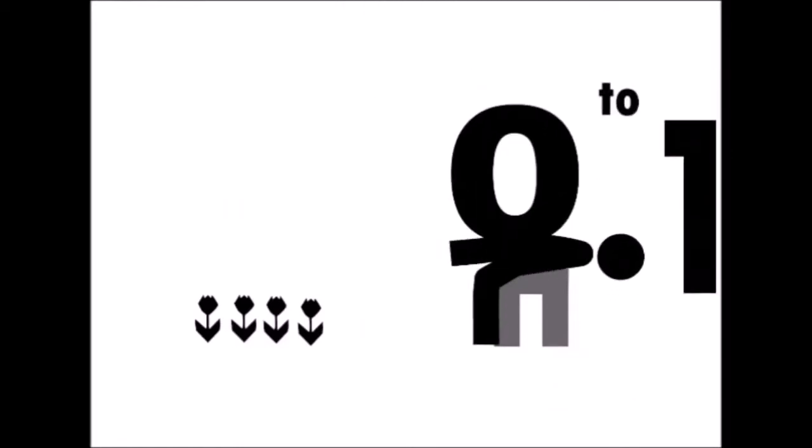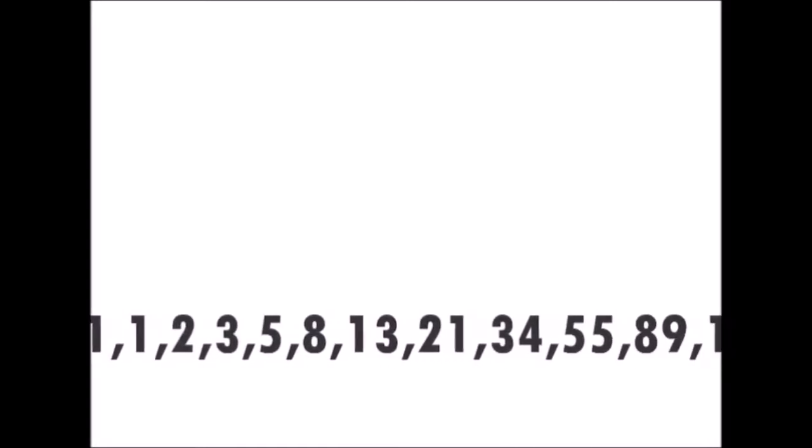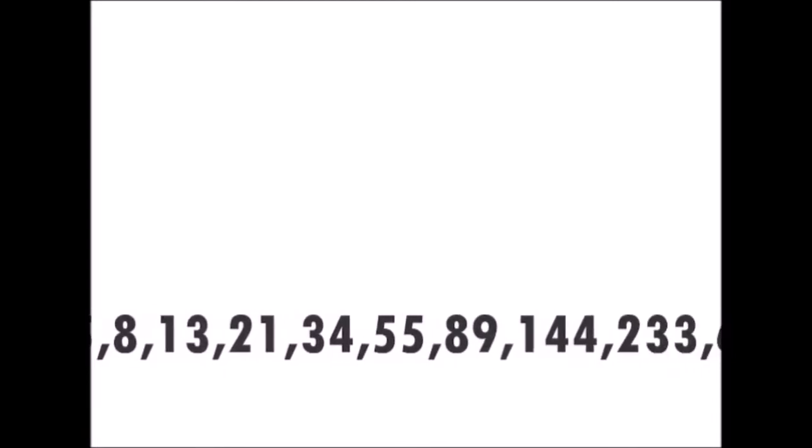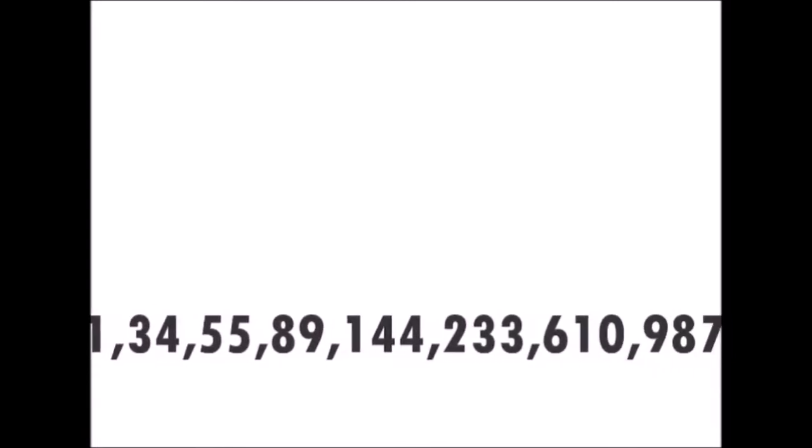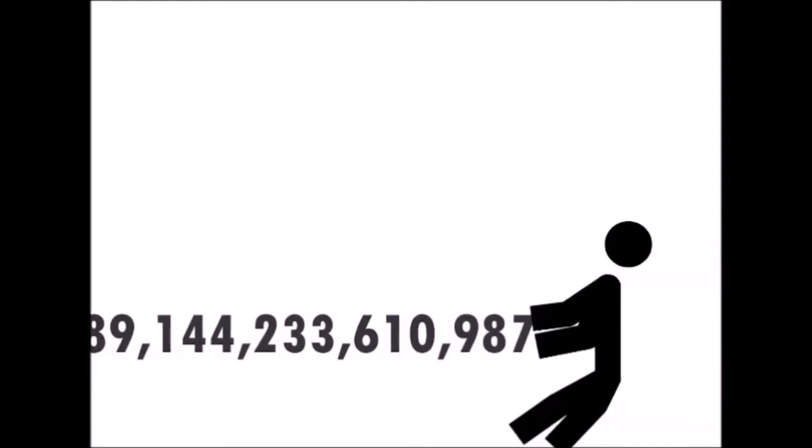The Fibonacci sequence is one of Fibonacci's greatest achievements and relates to nature. The sequence starts from 0 and goes to 1, then 1 once more, then 2 and continues on. It looks something like this: 0, 1, 1, 2, 3, 5, 8, 13, 21, 34, 55, 89, 144, 233, 377, 610, 987 and so on.